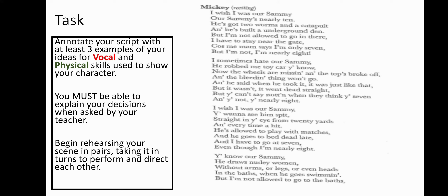Now you're going to do a more thorough analysis. You're going to annotate your script with your ideas for voice and physical skills, picking out key lines of dialogue. For example, 'I wish I was our Sammy' — you would underline the word 'wish' and note that you would like to emphasize it. When delivering the line 'two worms,' you would underline 'two' and write on your script that you would gesture with your fingers to show there are two worms. Your teacher will pause the video here for you to write down at least three ideas for vocal and physical skills.